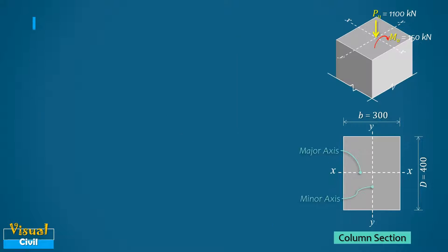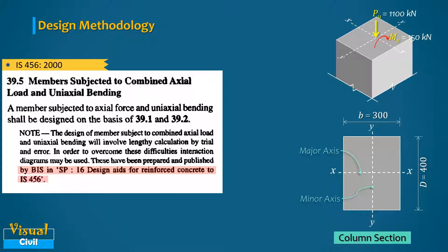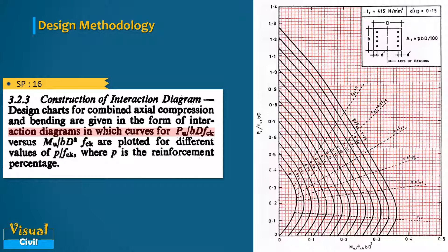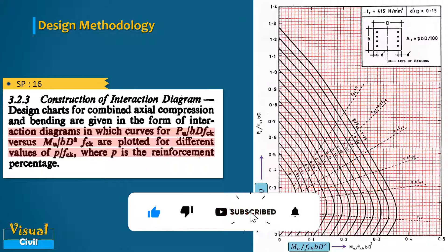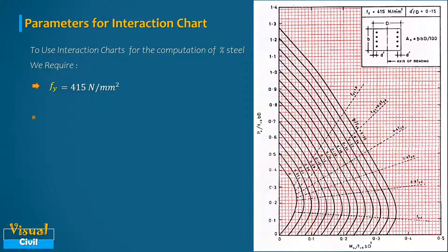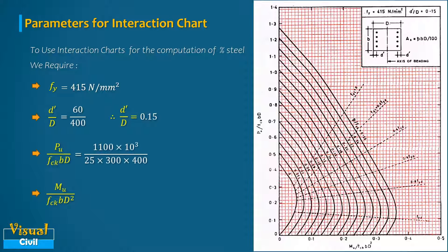IS 456 Clause 39.5 suggests the use of interaction charts from SP16. To use the interaction charts for computing percentage steel, we require fy = 415 N/mm², and the values of d'/D, Pu/fck·bd, and Mu/fck·bd². After substituting all values: d'/D = 0.15, Pu/fck·bd = 0.367, and Mu/fck·bd² = 0.125.